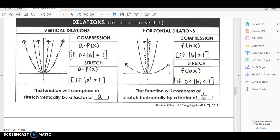So that's a horizontal compression and stretch, and you'll see that these are kind of opposites. The vertical and the horizontal are kind of opposites. So here, the horizontal, the function will compress or stretch horizontally by a factor of one over b, whatever that b value is.